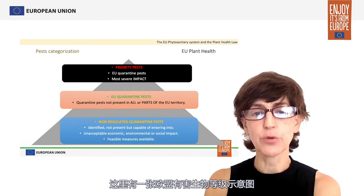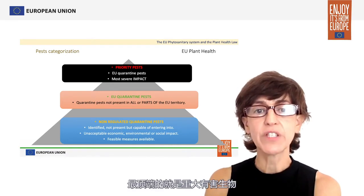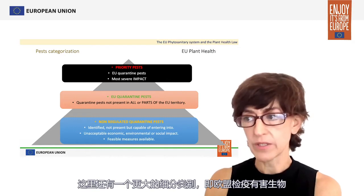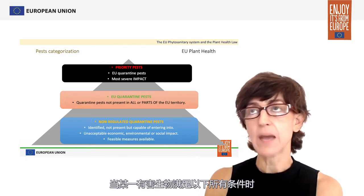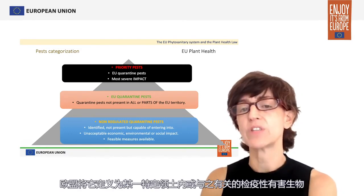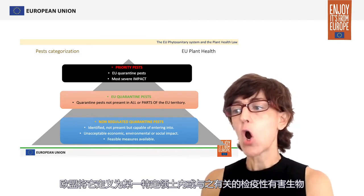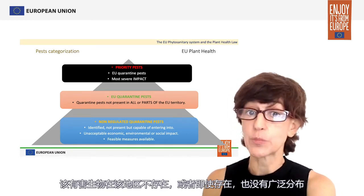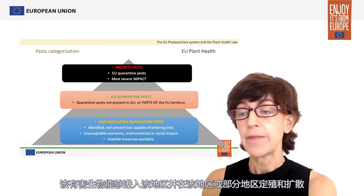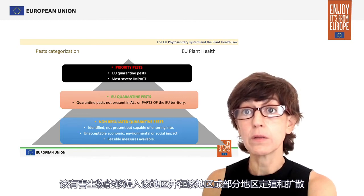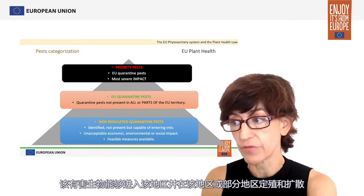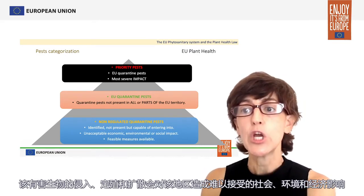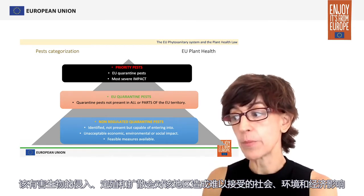Regarding pest categorization, the hierarchy of pests for the European Union has priority pests at the top, as a subset of the broader category of EU quarantine pests. The European Union defines a pest as a quarantine pest within a defined territory when it fulfills all of the following conditions: the identity of the pest is established; the pest is not present in the territory, or if present, it is not widely distributed; the pest is capable of entering, establishing, and spreading through this territory; and the entry, establishment, and spread of the pest would represent an unacceptable social, environmental, and economic impact on that territory.